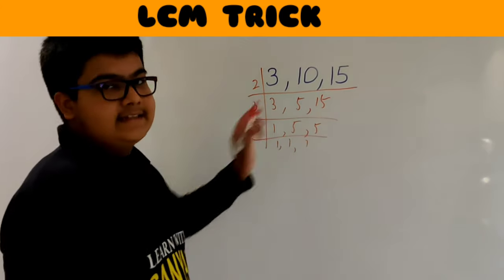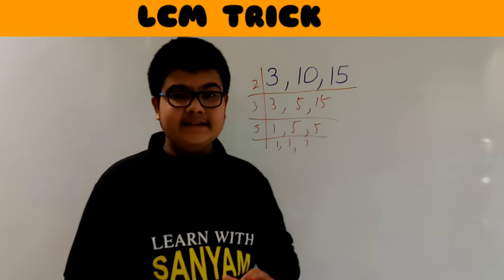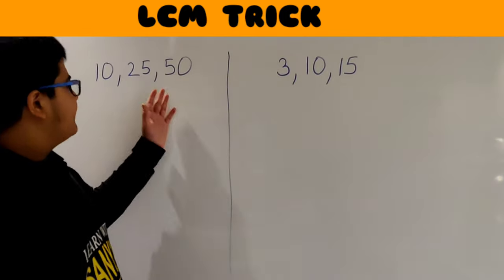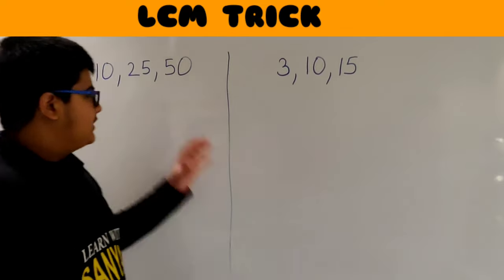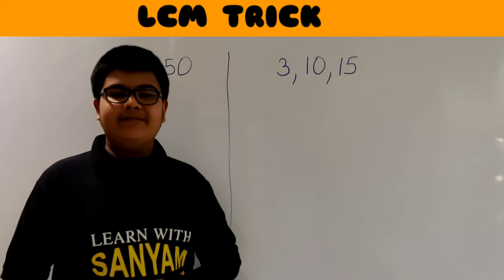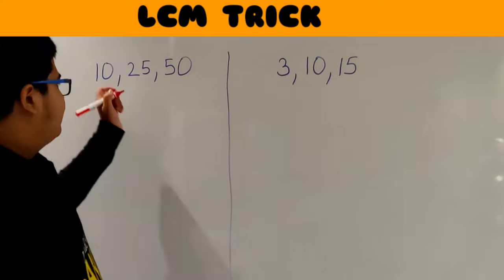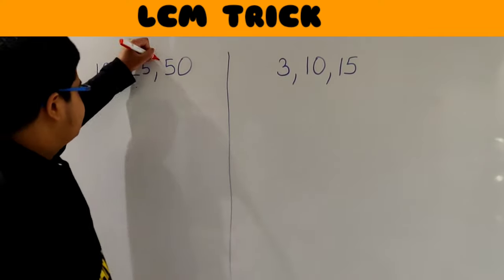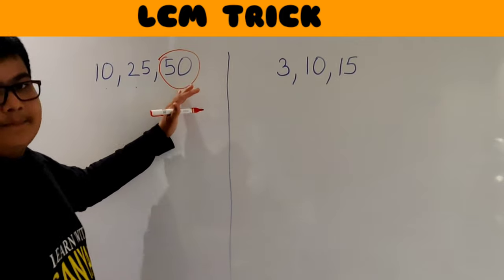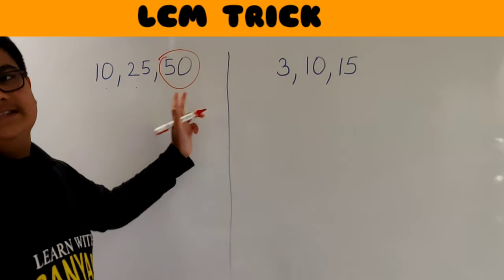But by using this trick, you will be able to find the LCM of these numbers by just looking at them. So without wasting any time, let's start. Let's find the LCM of these numbers using this trick. The first set of numbers we have is 10, 25, and 50. This trick has two simple steps. Step number one is to check which is the largest number out of the given numbers. Out of 10, 25, and 50, the largest number is 50. Step number two is to check whether this largest number completely divides all the other numbers — that is, whether all the other numbers are factors of this number or not.